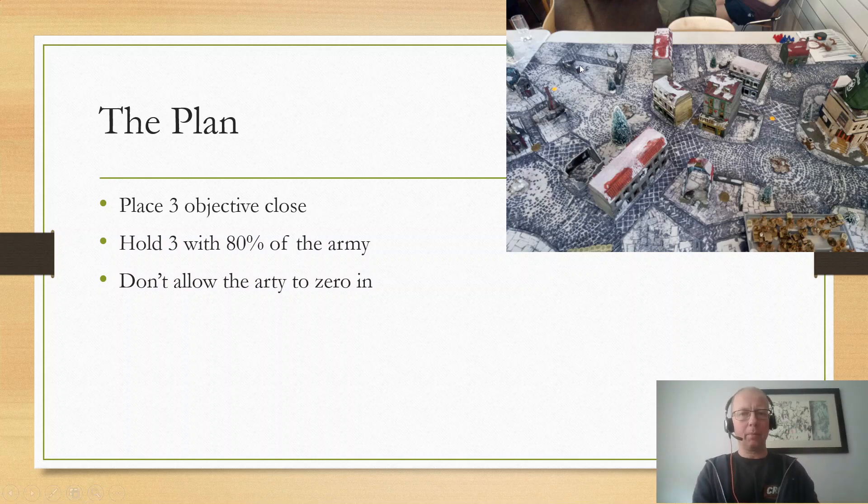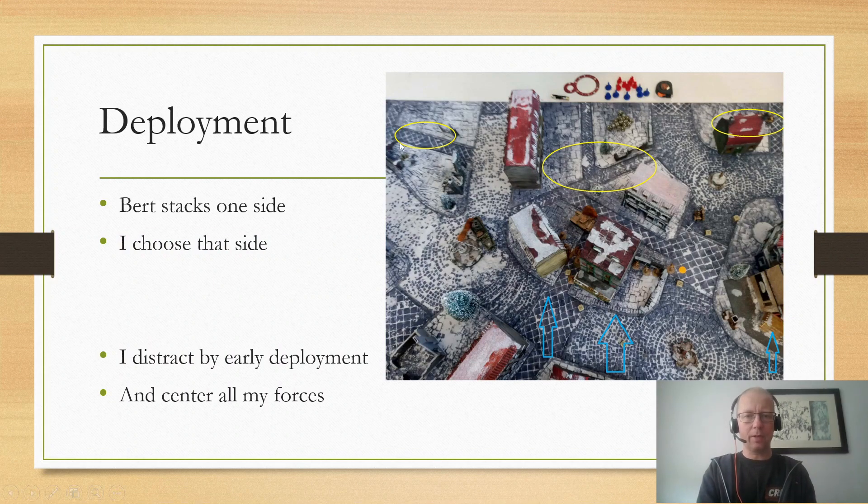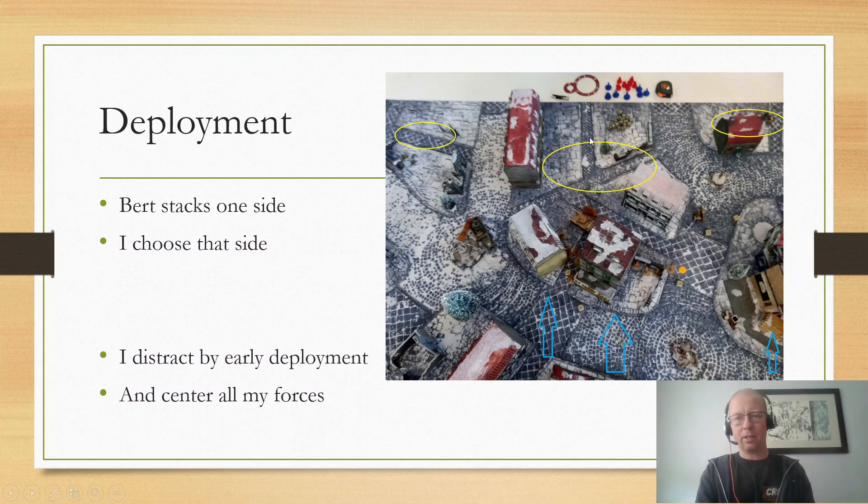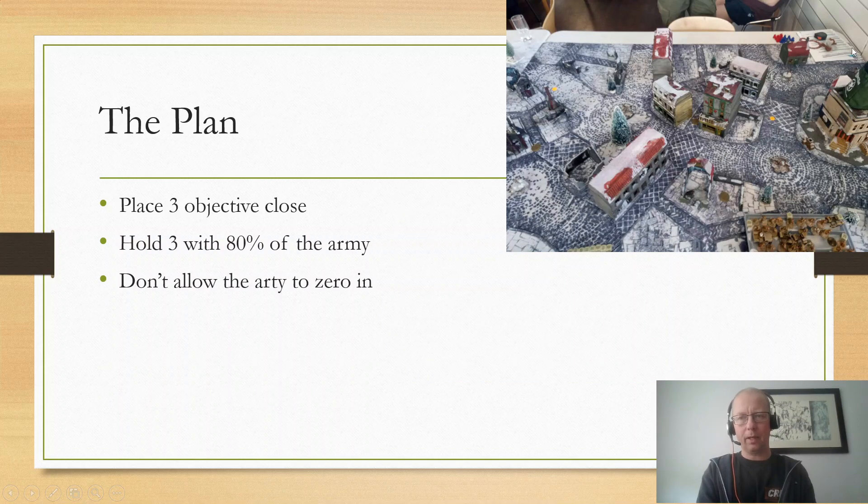And Bert mirrors me, because that's a thing you can lure your opponent into mirroring you. He had three deployment zones - one here behind the ruins, one in the center, and then he had his artillery set up over here with the recoilless rifle sitting here, and his heavy howitzer sitting all the way over in this corner. He wanted as much range as possible, and he could see two objectives from that position.